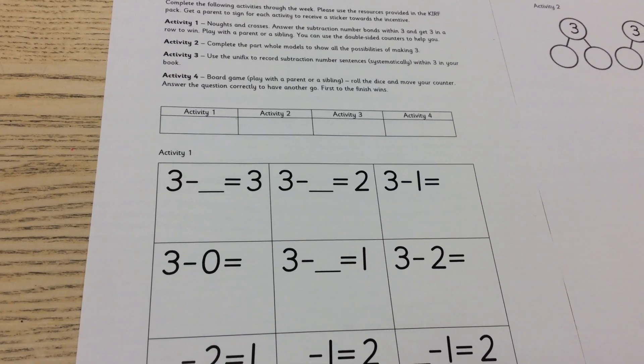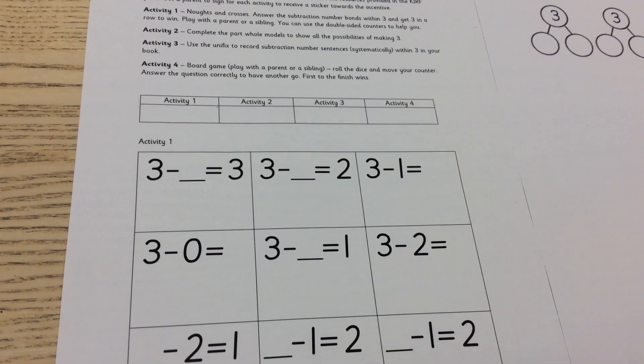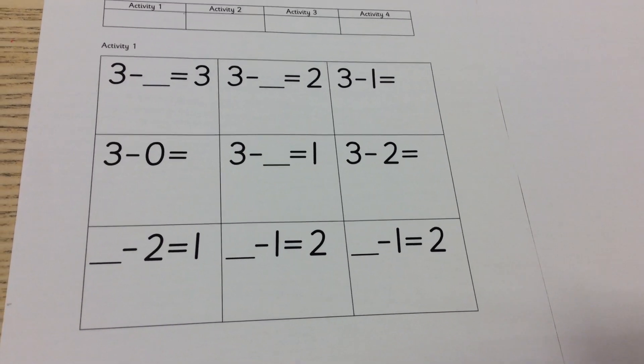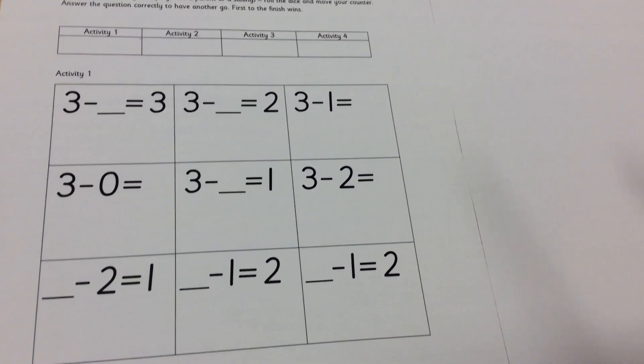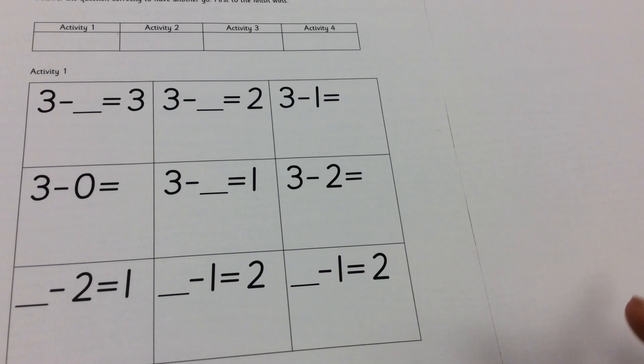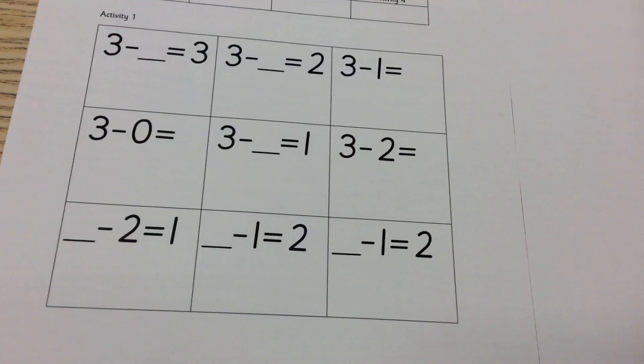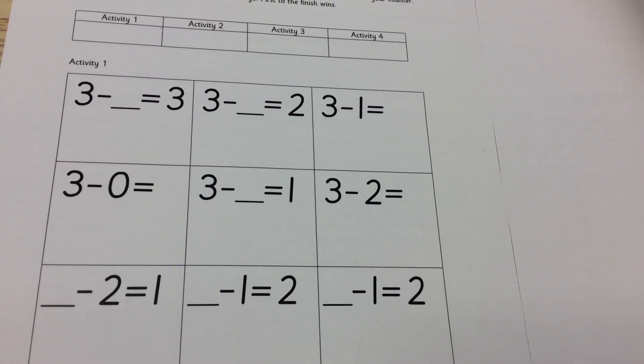Activity 1 is pretty much the same, noughts and crosses. Answer the subtraction number bonds within 3 and get 3 in a row to win. You can play with either a parent or a sibling. Your child can use the unifix or the double-sided counters to help you.